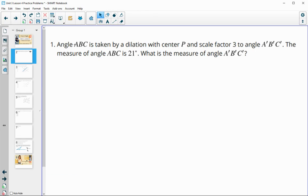Number one tells us that we have an angle ABC that's being taken by a dilation. They give us the center and the scale factor, and it's being taken to A prime, B prime, C prime. The measure of that angle is 21 degrees, and then they want us to determine the measure of the dilated angle A prime, B prime, C prime. And when you have a dilation, angle measures don't change. So ABC is going to be the same as A prime, B prime, C prime. So this one's going to be 21 degrees.